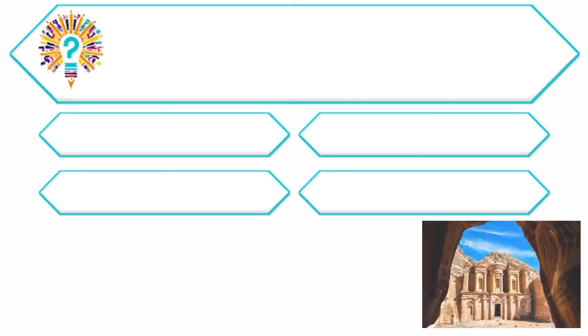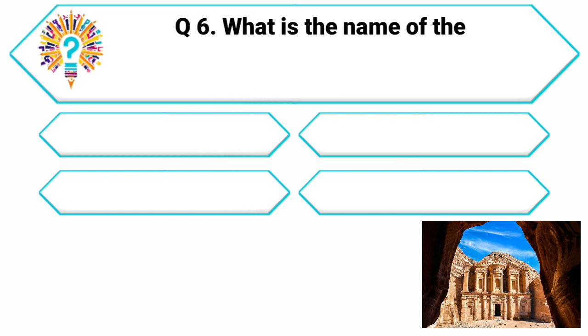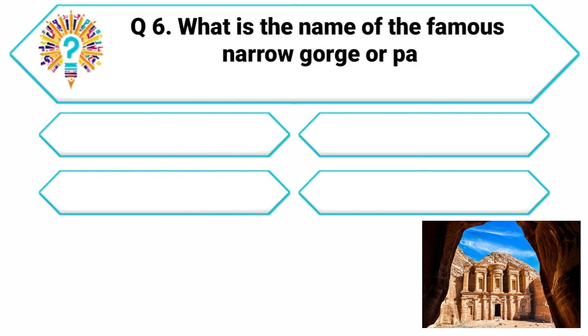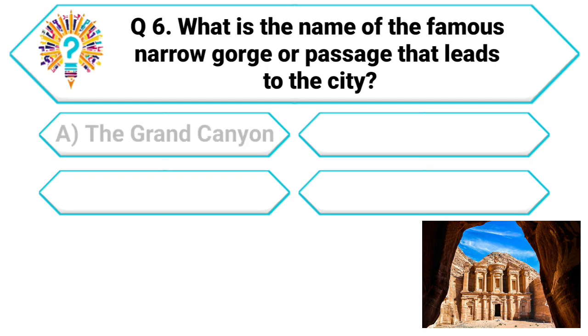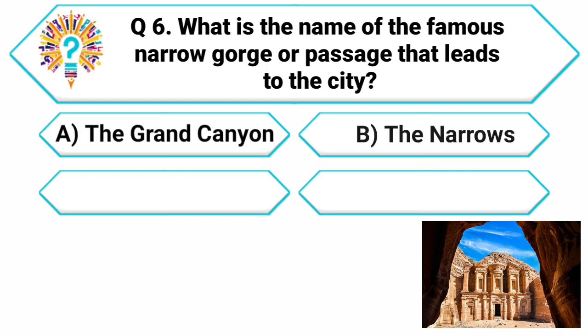Question 6. Our next destination is the ancient city of Petra. What is the name of the famous narrow gorge or passage that leads to the city? Your options are: A. The Grand Canyon, B. The Narrows, C. The Siq, D. The Chasm.